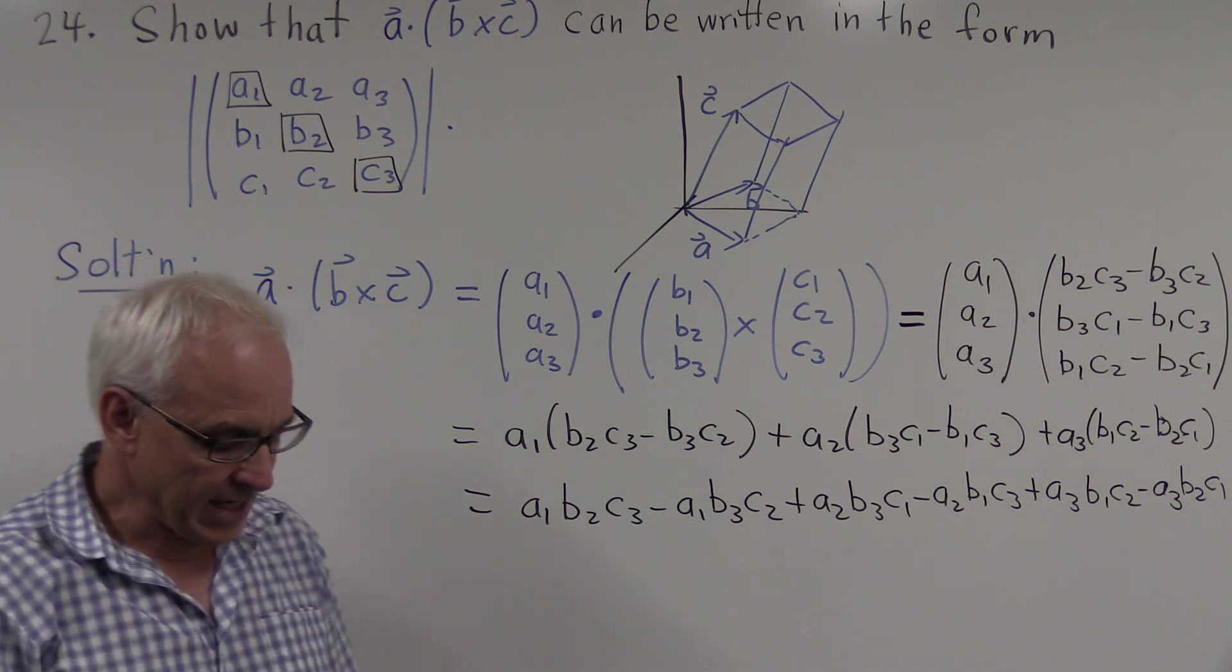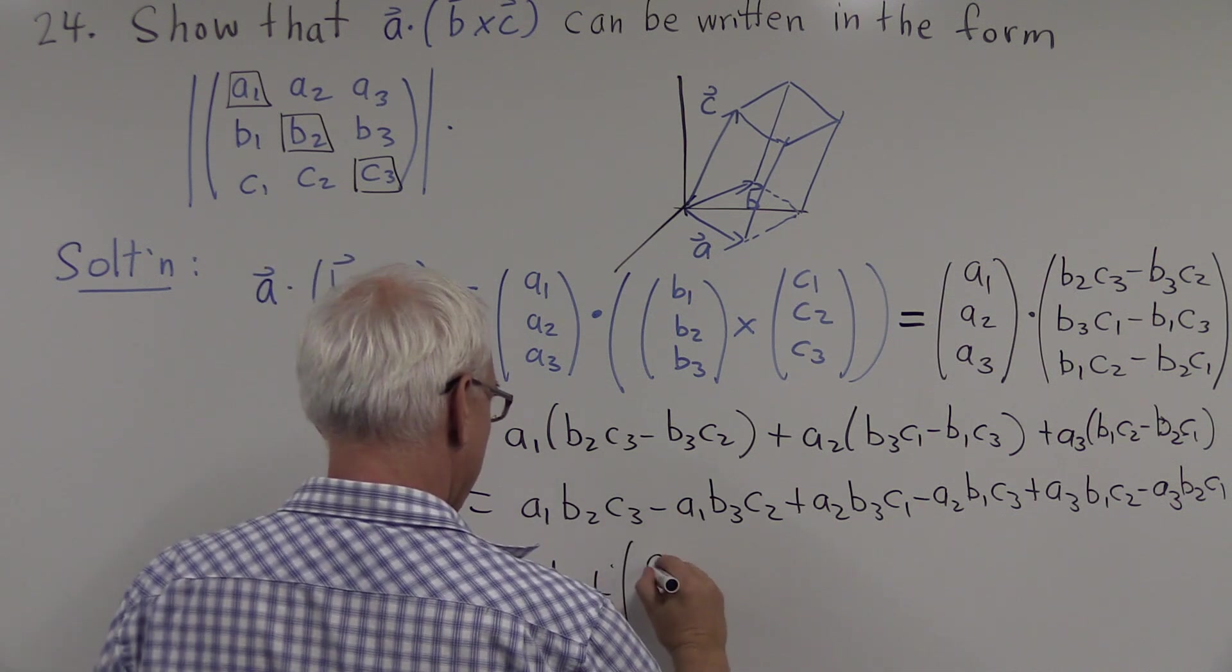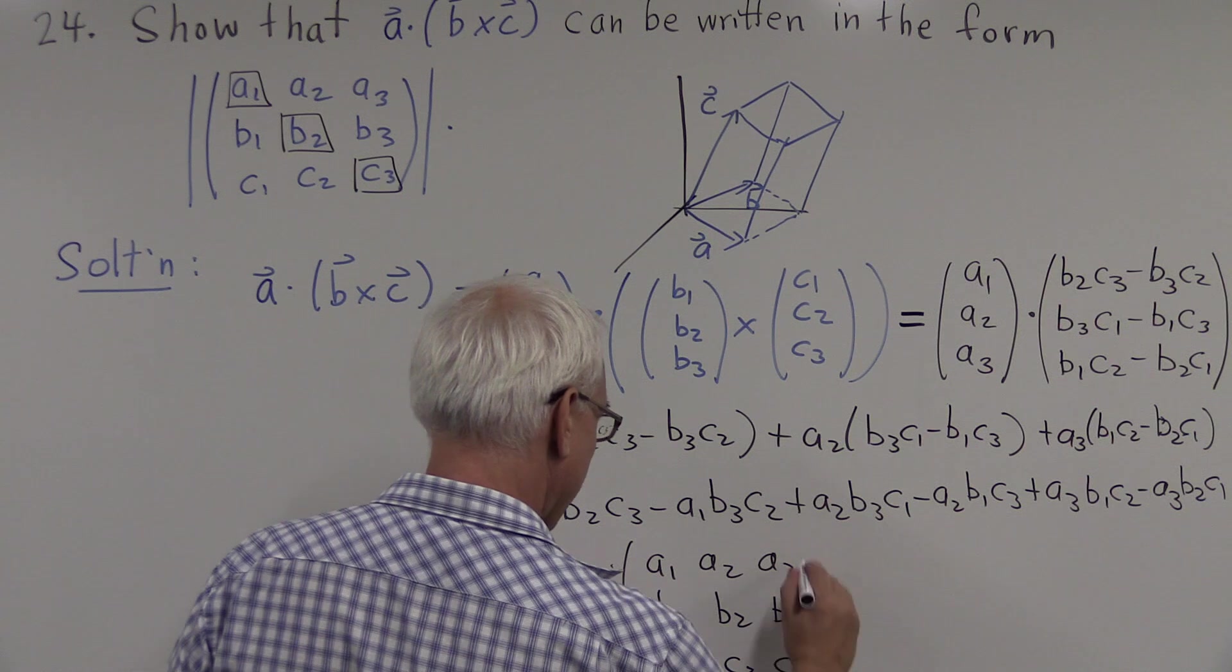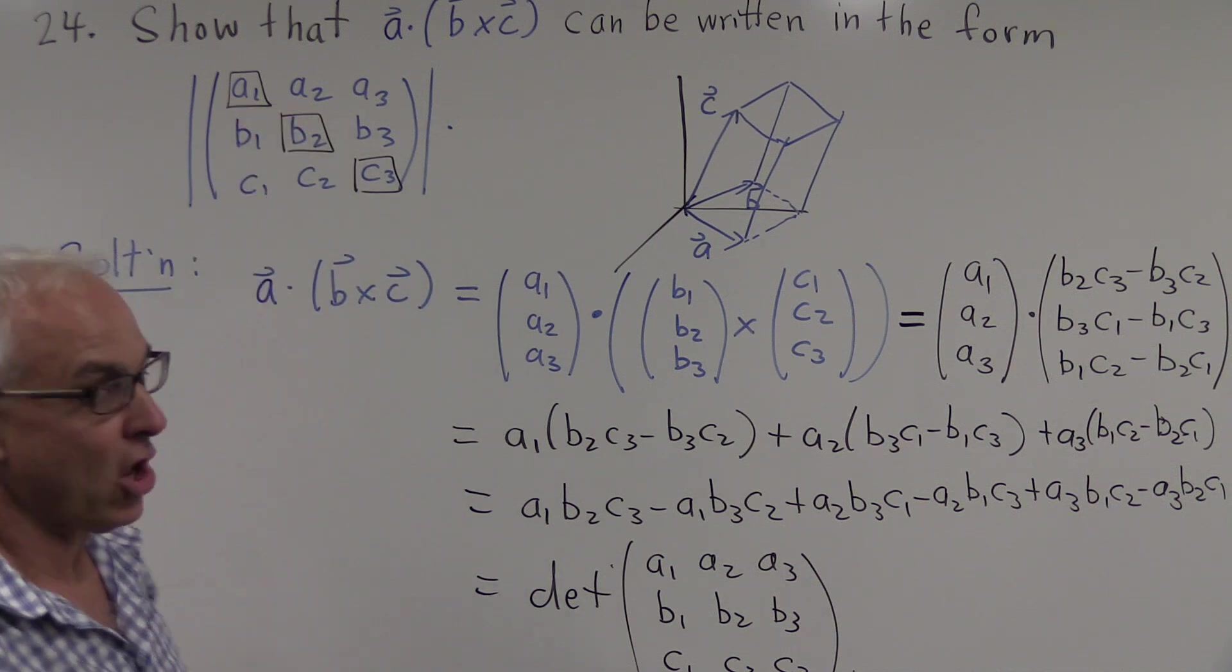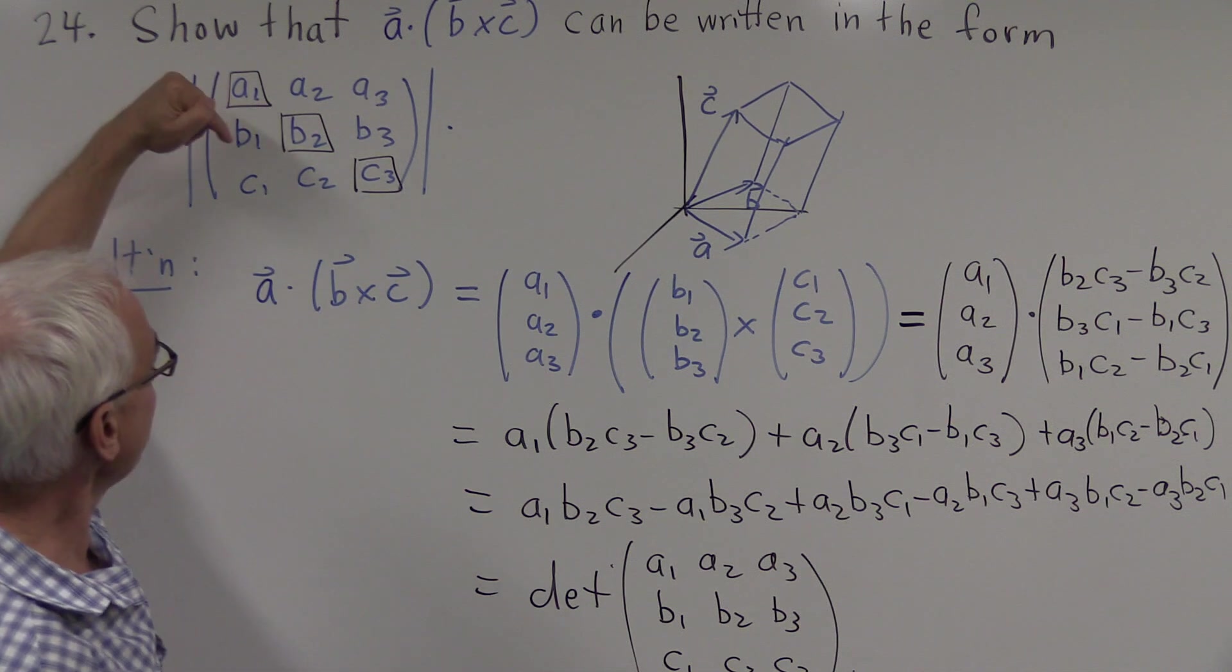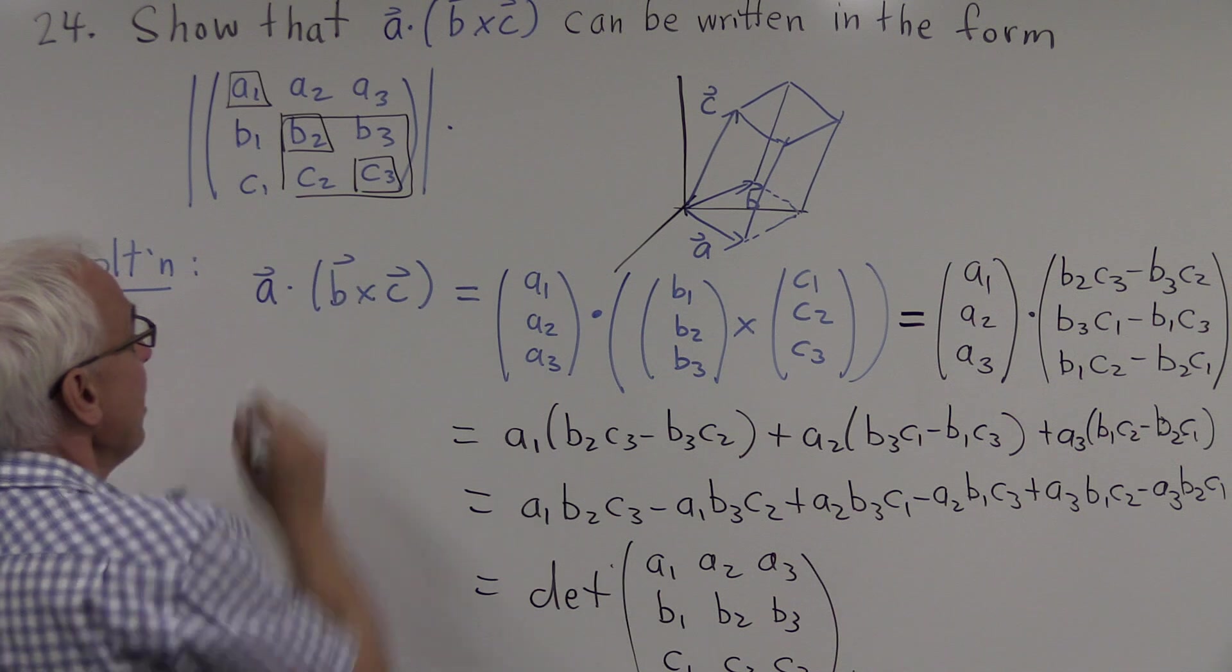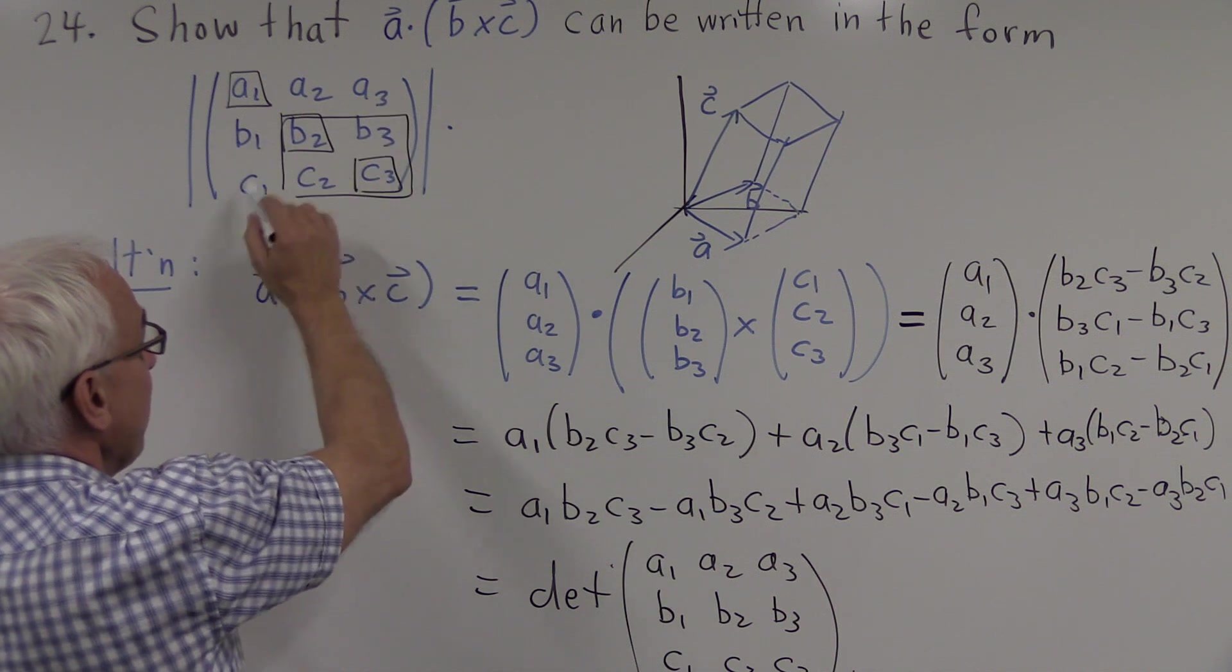So another way of seeing that this is actually equal to the determinant of this matrix, a1 a2 a3, b1 b2 b3, c1 c2 c3, is to think in terms of expanding this matrix along the first row. So another way of thinking about the determinant is to say that it's a1 times this 2 by 2 determinant, minus a2 times this 2 by 2 determinant, plus a3 times this 2 by 2 determinant.